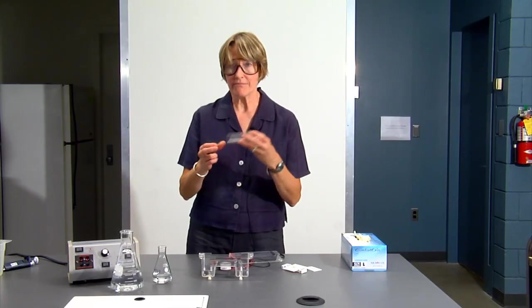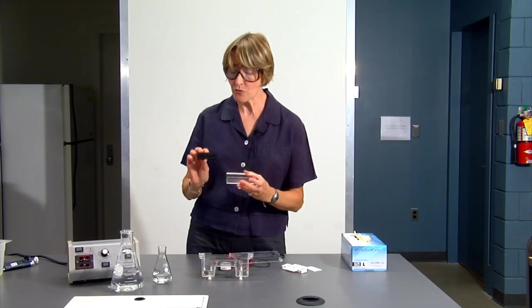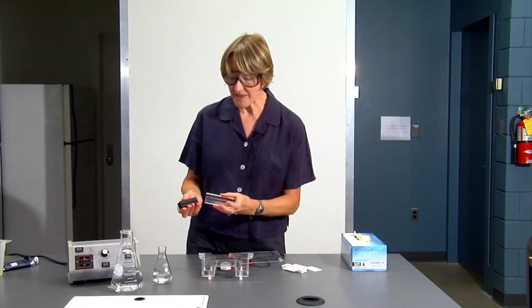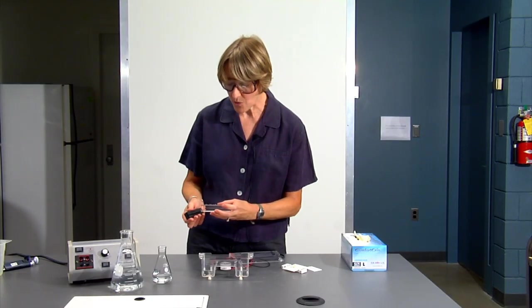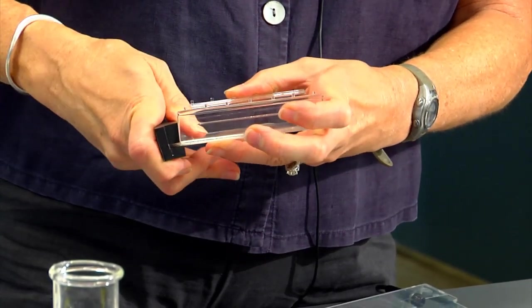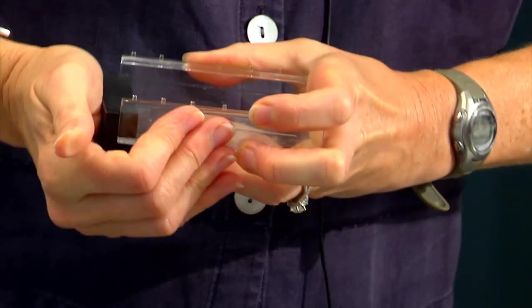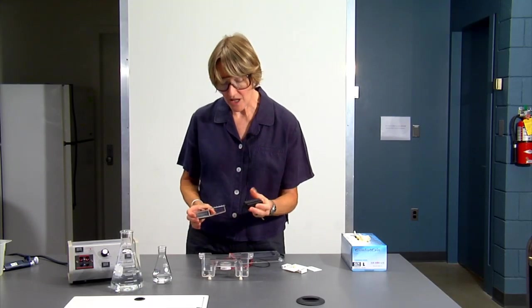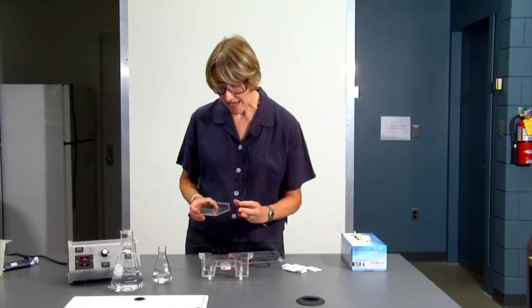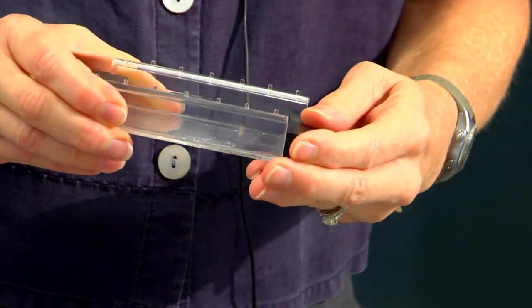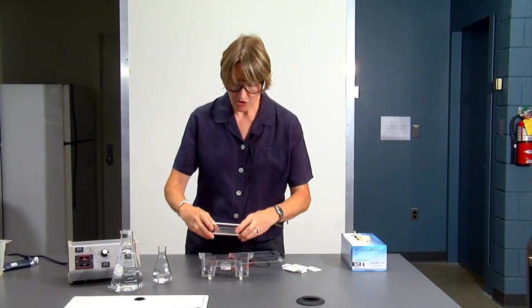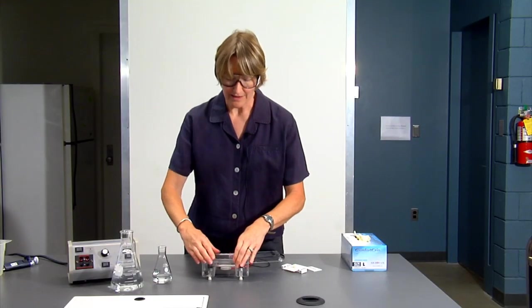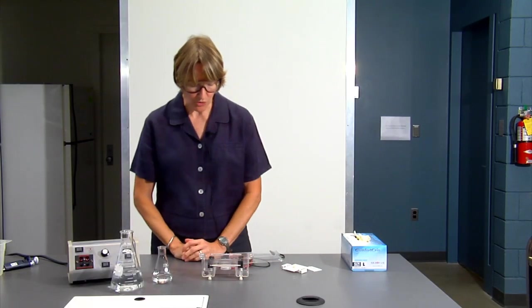Let's put the gel tray together. Notice that the rubber dams have a thick end and a thin end, and you want to put the dam onto the gel tray with the thick end at the top. Just push the rubber dam onto the tray until it's secure. Then do the same with the other side, making sure that the thick end is near the top. Now you're all set with your tray. The tray sits down into the gel box and should now be level, and you're ready to pour the gel.